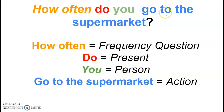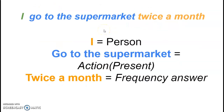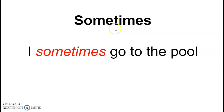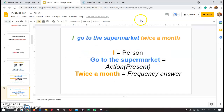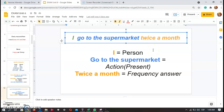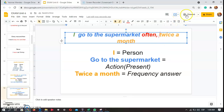So: 'How often do you go to the supermarket?' Here is the word order — 'how often' is the frequency question, 'do' indicates present tense, 'you' is the person, and 'go to the supermarket' is the action. If I ask you 'how often do you go to the supermarket?' you say 'I go to the supermarket twice a month.' You can also add a general frequency: 'I go to the supermarket often, twice a month.'